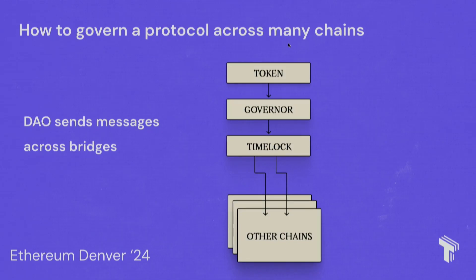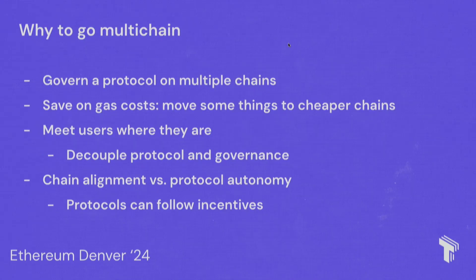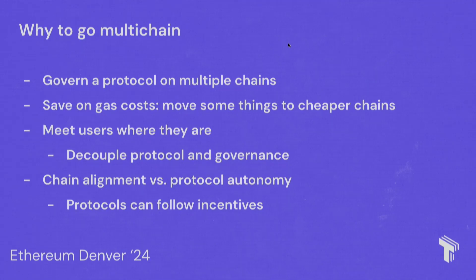That system — existing DAO contracts plugged into bridges to govern a protocol on many chains — doesn't fully take advantage of everything possible with multiple chains, each with different parameters and trade-offs. There are more reasons to go multi-chain beyond taking a protocol multi-chain. Now that many networks exist, there are good reasons to start pulling apart those three contracts — the token, governor, and timelock — placing pieces on the chain where it makes most sense based on trade-offs. For example, gas is much cheaper on a rollup or even a layer-three than on Ethereum mainnet.